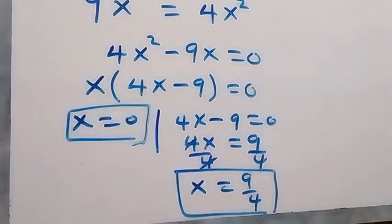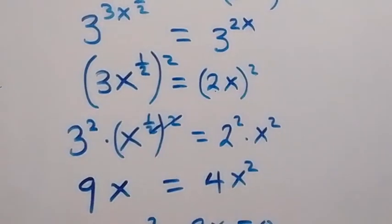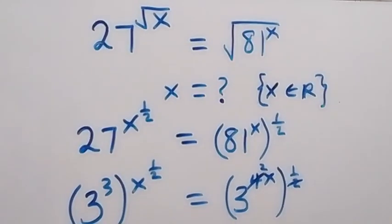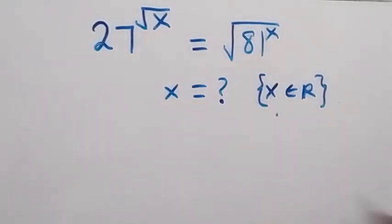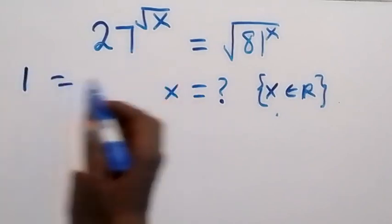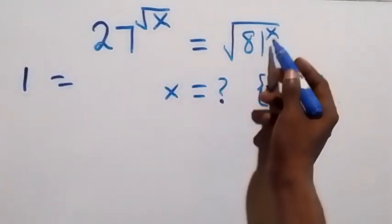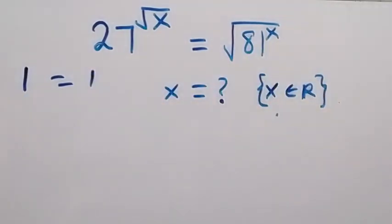So we have x equals 0 and also x equals 9 over 4. To check if these values satisfy the given equation — 27 raised to power root x equals root of 81 raised to power x — when we put x equals 0, root 0 is 0, so 27 raised to power 0 is 1. On the right side, 81 raised to power 0 is 1, and root 1 is 1. Both sides equal 1, so x equals 0 is satisfied.